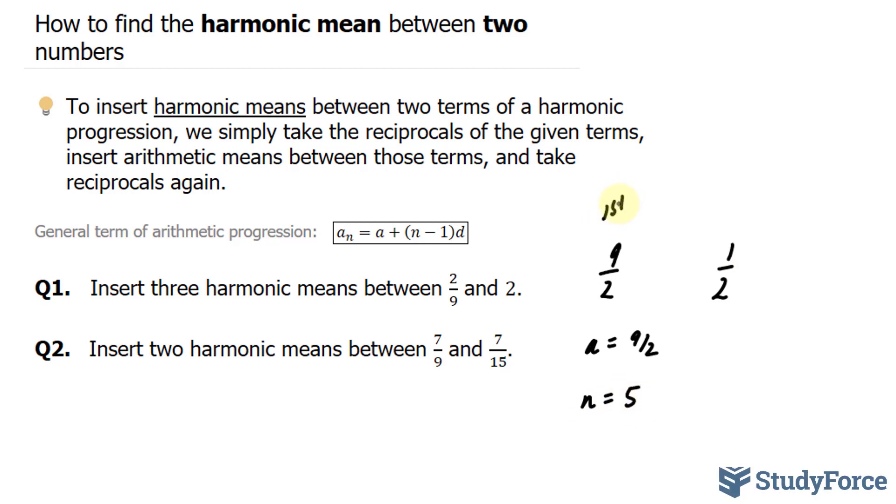This is our first term. This, therefore, will be our fifth term. And so, we can represent 1 over 2 as a subscript 5. We have three pieces of the puzzle for this equation. All we have to do is solve for d.